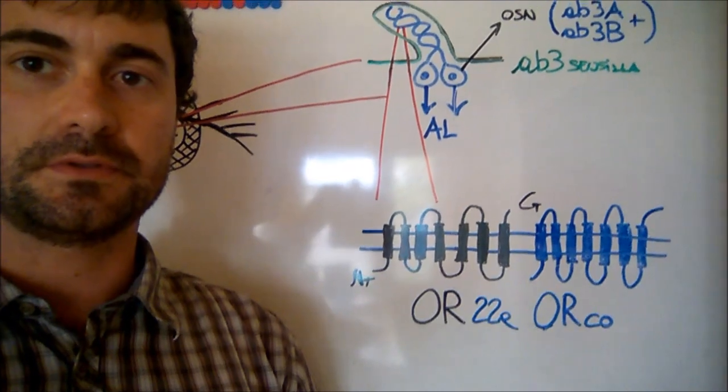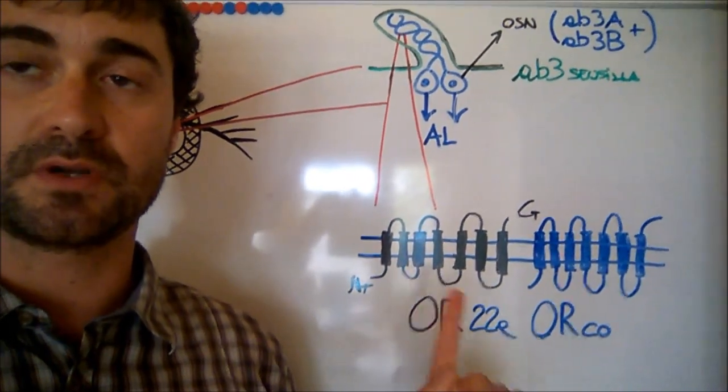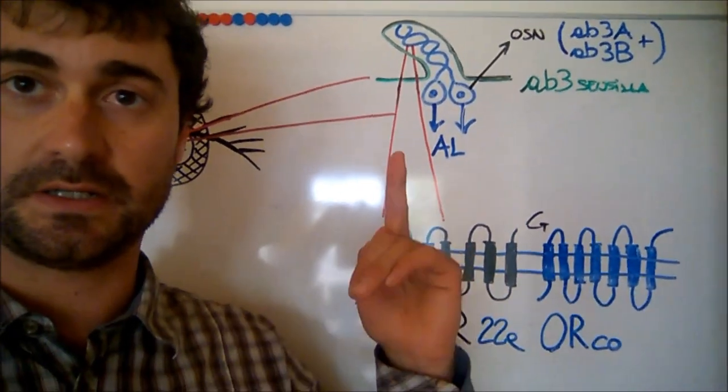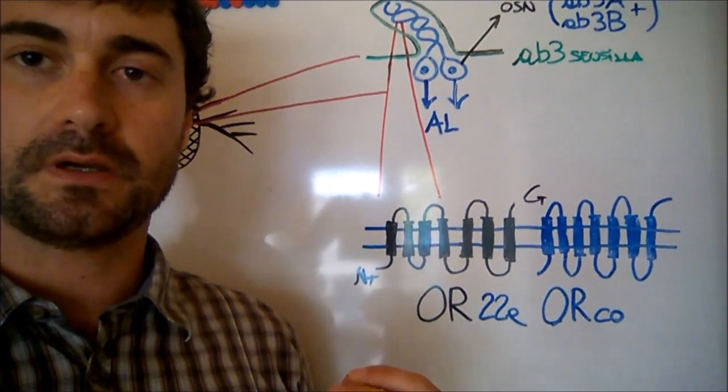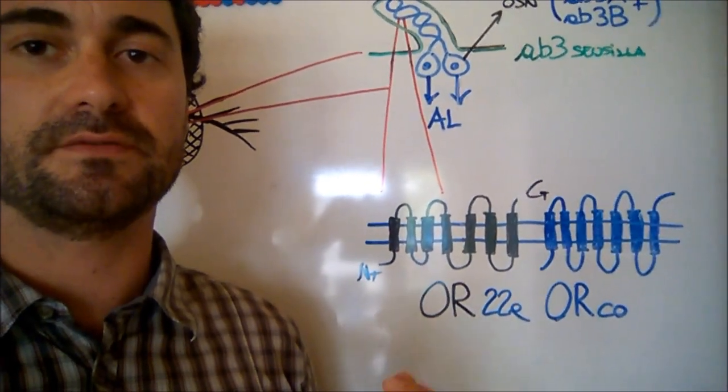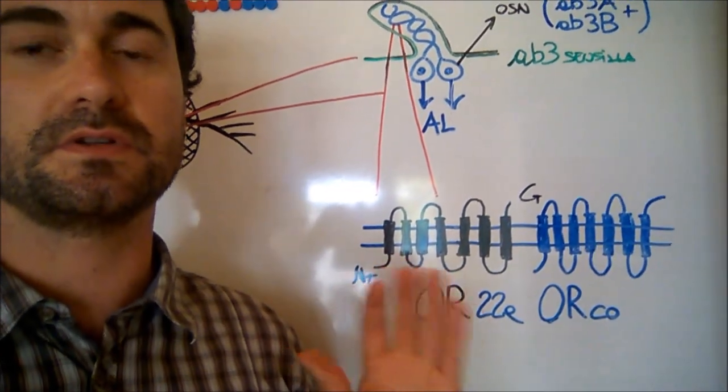Olfactory receptors are seven transmembrane proteins expressed in olfactory sensory neurons, and the stoichiometry they have with the olfactory coreceptor is not known yet.